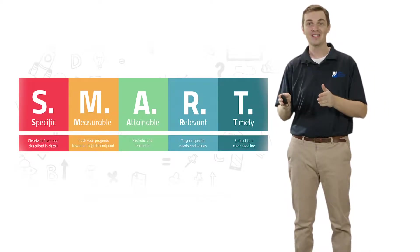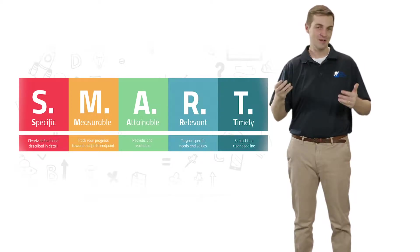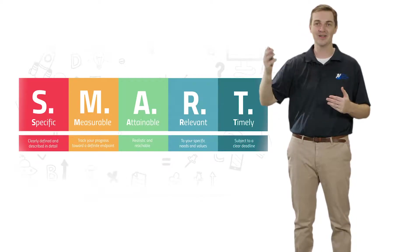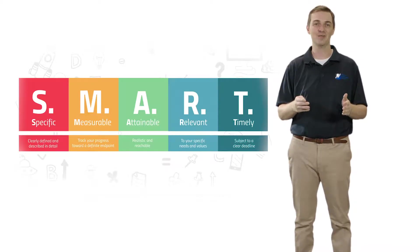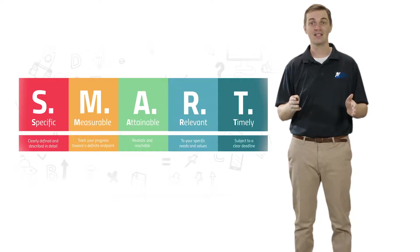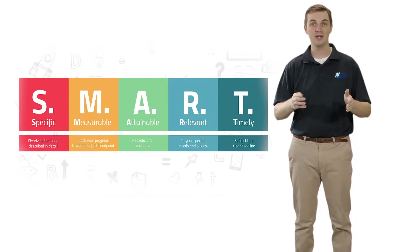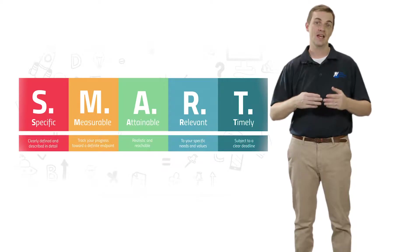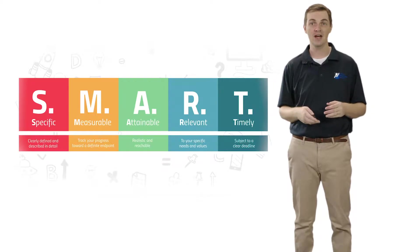The third is the A and this goal should be attainable. My childhood dream of walking on the moon may not have been attainable before the age of 18. The fourth one is the goal should be relevant. It should be in line with your experience and what you've achieved in the past.